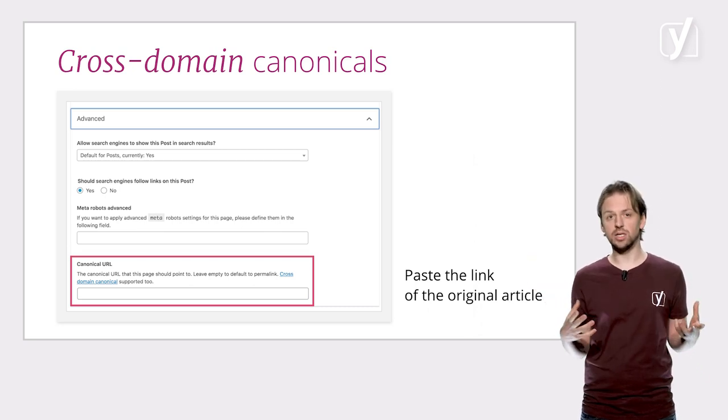You just paste the link of the original article. If you want to know more about the technical aspects of canonical, we have a technical SEO course in which we go into the details, so you can actually implement and adjust canonicals yourself. If you already know a lot about canonical, you can use the WPSEO_canonical filter to tailor canonicals to your personal preference. Good luck!